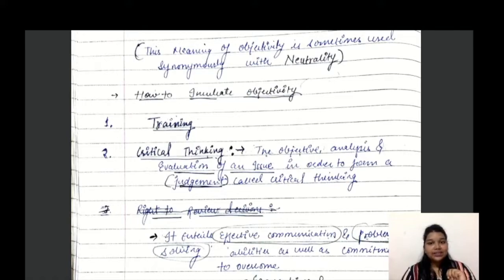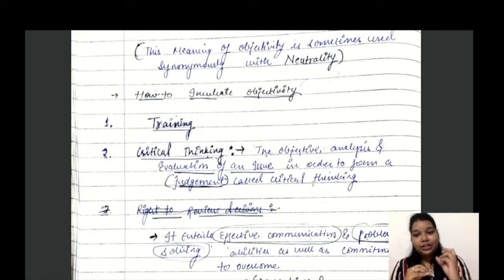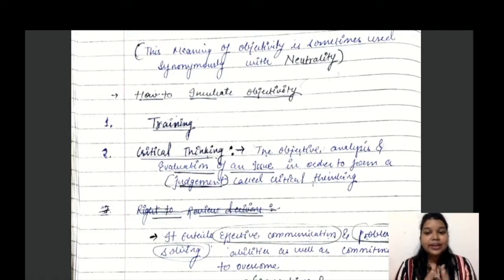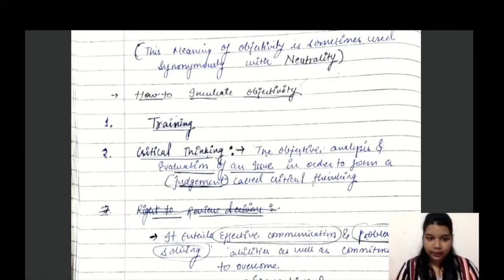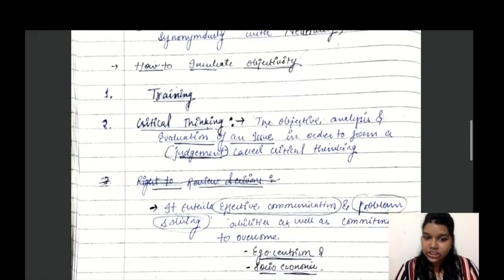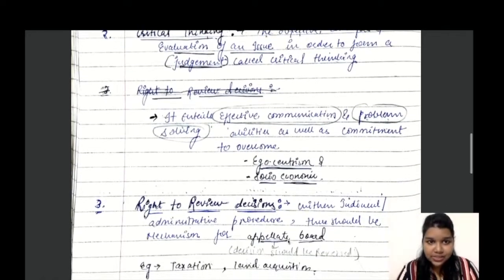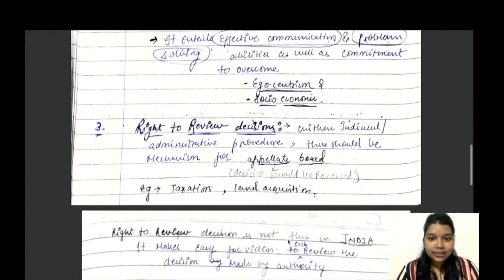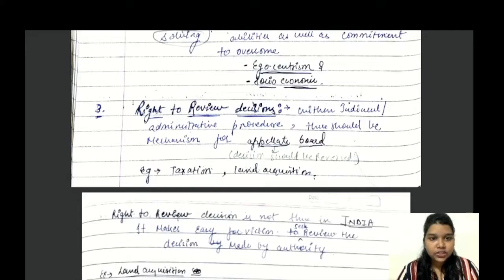The second method is critical thinking — the objective analysis and evaluation of an issue in order to form a judgment. By doing analysis and evaluation, you provide a judgment, and that is called critical thinking. It entails effective communication, problem-solving ability, and commitment to overcome ego-centric and socio-economic problems.